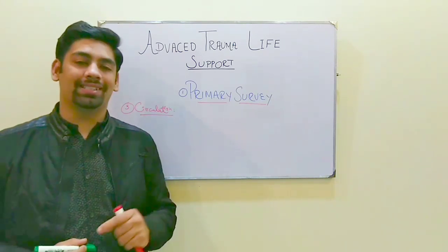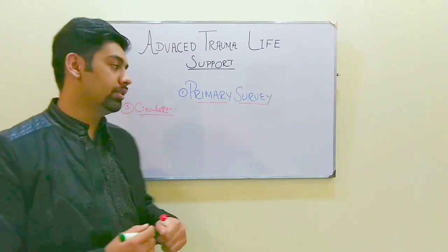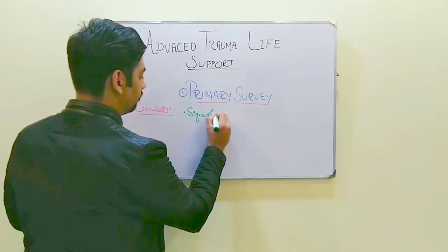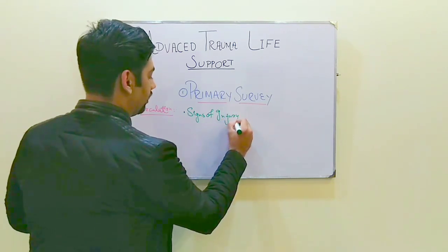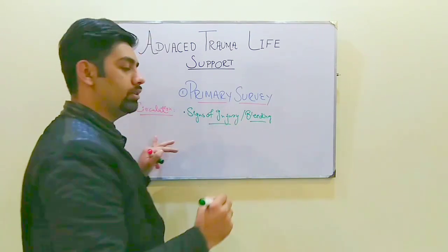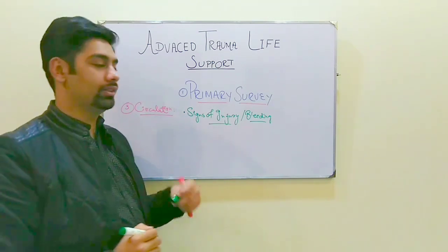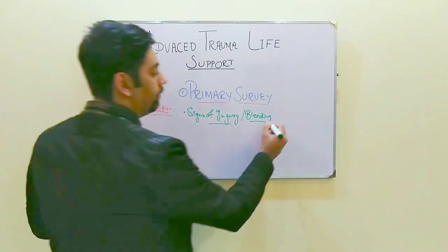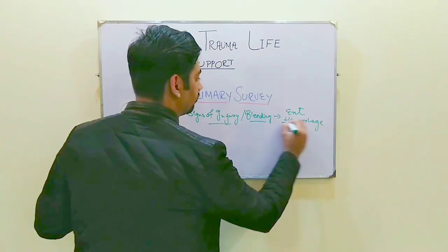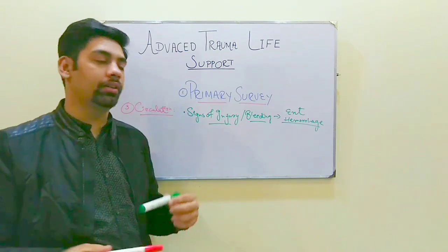In the circulation component, we assess the BP and pulse rate, and we look for signs of injury and signs of bleeding. The patient might be bleeding internally or externally. If the patient is bleeding externally, we have to control the external hemorrhage. Overall, in the circulation component, we have to maintain the normal circulatory level in the patient.